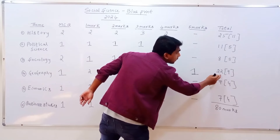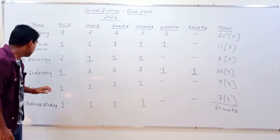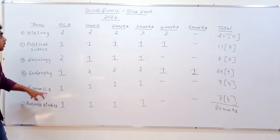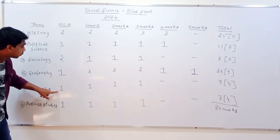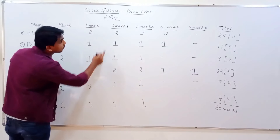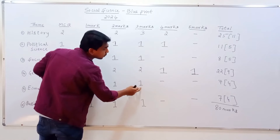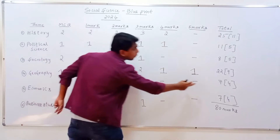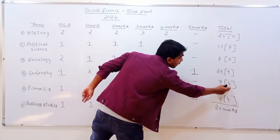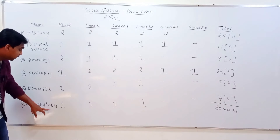Economics: multiple choice — one mark is one question, two mark is one question, three mark is one question. Total is 7 marks. Yes questions — no additional questions included.